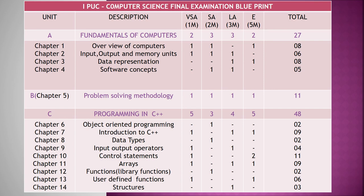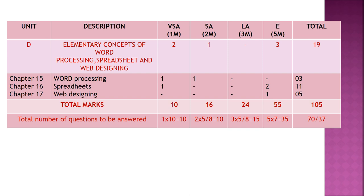Unit D is Elementary Concepts of Word Processing, Spreadsheets, and Web Designing. Unit D consists of three chapters with a total weightage of 19 marks. Chapter fifteen — Word Processing — carries one one-mark and one two-mark question, totaling three marks. Chapter sixteen — Spreadsheets — carries one one-mark and two five-mark questions, totaling eleven marks. Chapter seventeen — Web Designing — has one five-mark question. The total marks weightage of the syllabus is 105 marks.